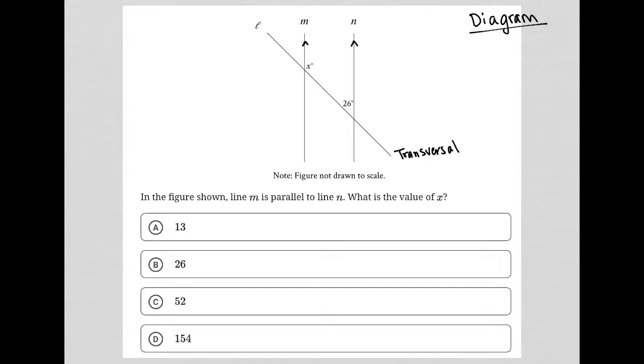What we have here between our x and our 26 degrees is something that's called same-side interior angles. It's named same-side interior angles because both of these angles are on the same side of the transversal.